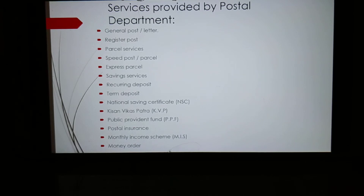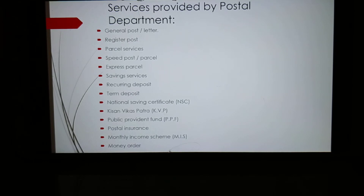Recurring Deposit: the account holder has to pay the decided amount on or before the pre-decided date to the post office. At the end of 5 years, when the account matures, the entire principal amount along with interest will be received. Accounts can be opened for a duration of 1, 2, 3, or 5 years, with deposits of 200 rupees or its multiples. Interest is calculated every 3 months but the interest amount is paid on a yearly basis.